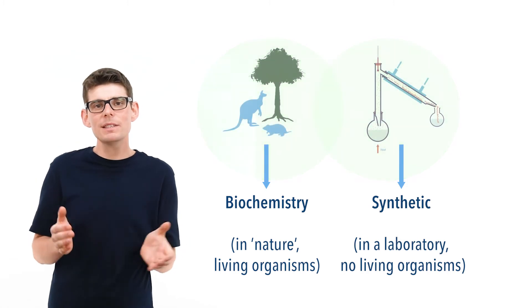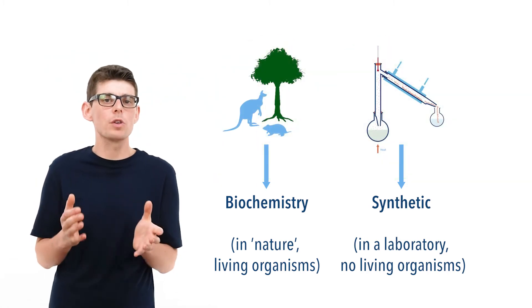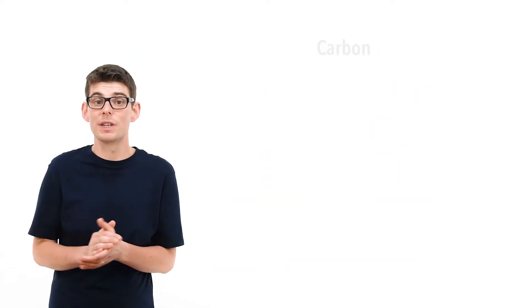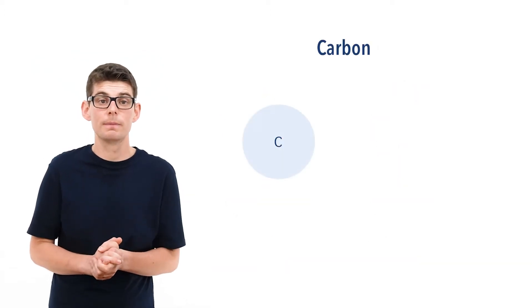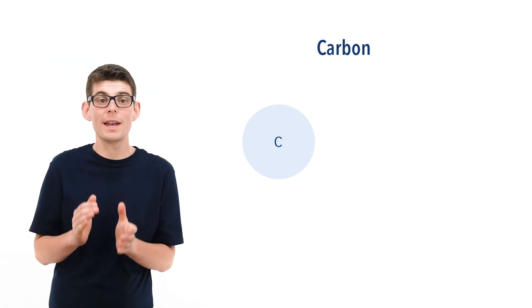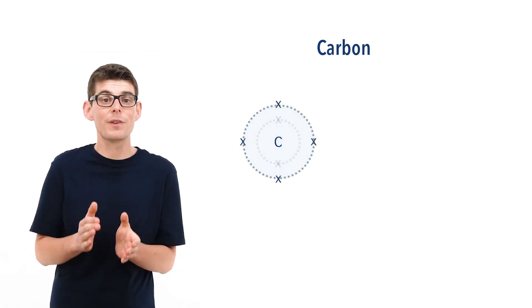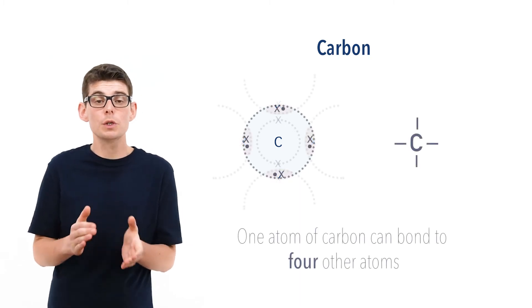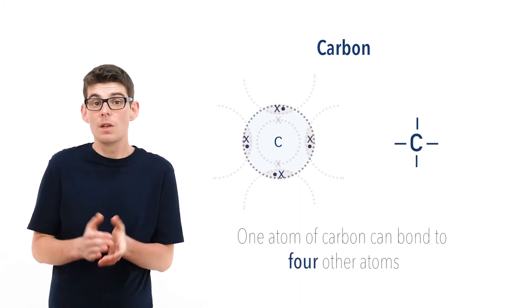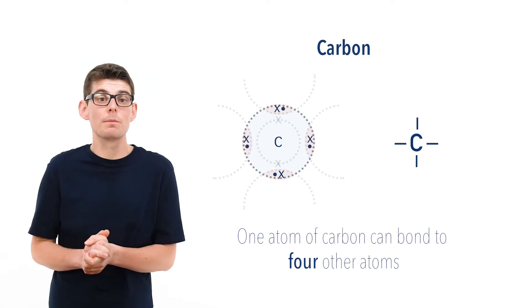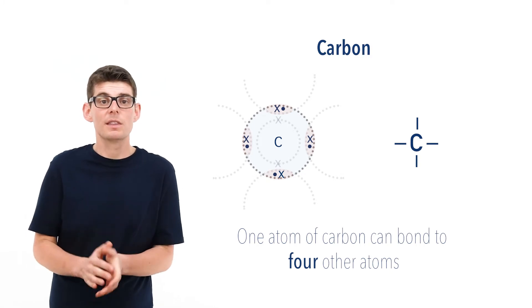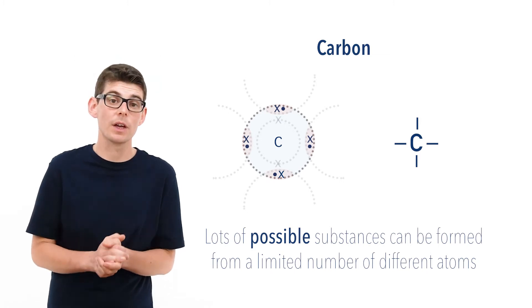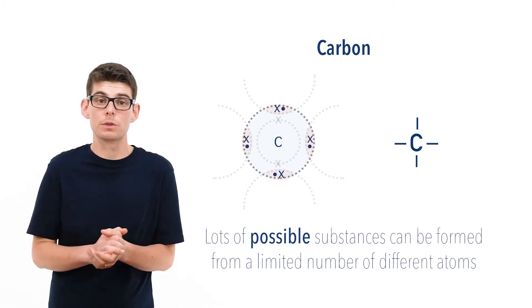It may seem strange that there is a whole branch of chemistry centred around carbon, but carbon is actually a pretty special element. Carbon has four electrons in its outer shell and a valency of four, meaning it can make four covalent bonds to other atoms. This means even with a limited number of atoms of other elements, there are lots of possible ways all the carbon atoms can bond together, meaning lots of different molecules can be formed.